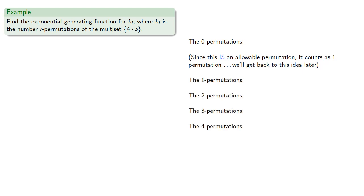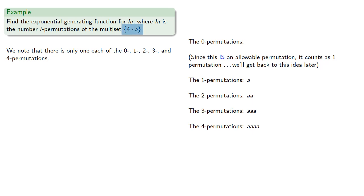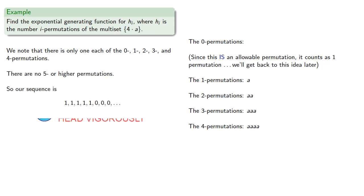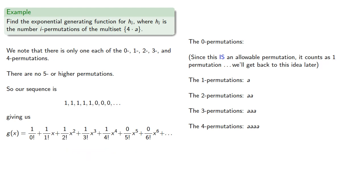The one, two, three, and four permutations each have exactly one permutation. Because we only have four a's, there are no five or higher permutations. So our sequence gives us the exponential generating function as a power series whose coefficients all have denominators equal to a factorial and whose numerators are the terms of the sequence. Since everything after the x to the fourth term is zero, we can omit them.